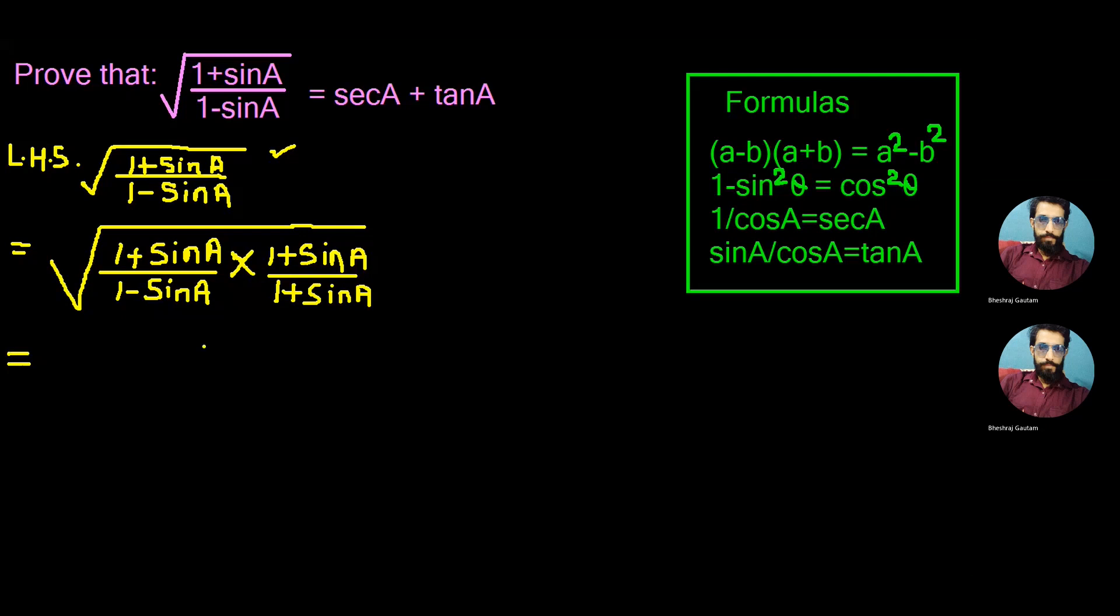Now as you see the numerator has one plus sin A on both the trigonometric fractions, so we write this as one plus sin A whole square, whole divided by...